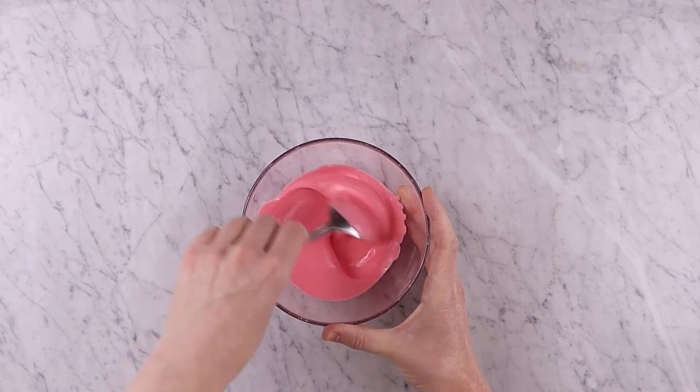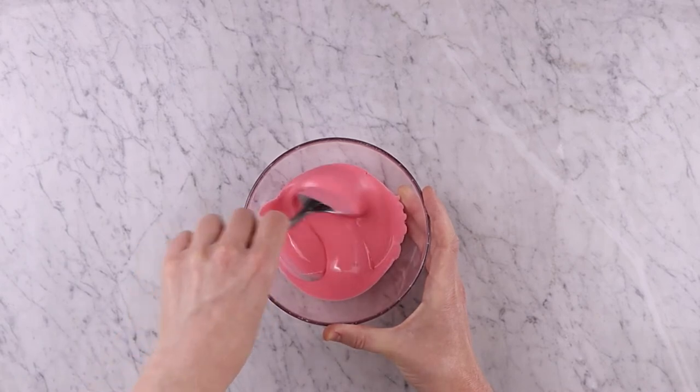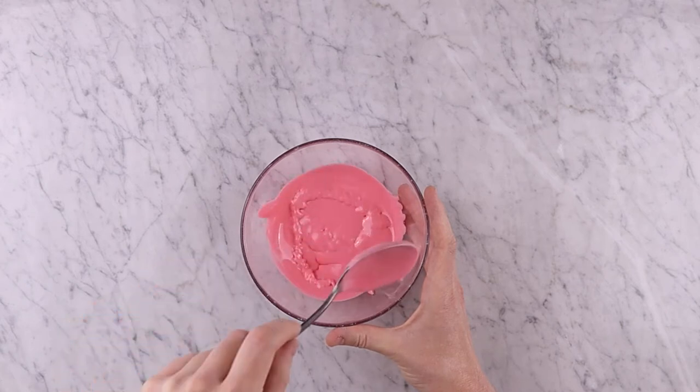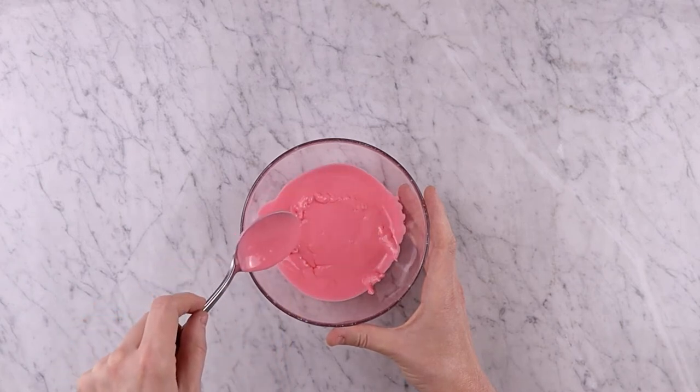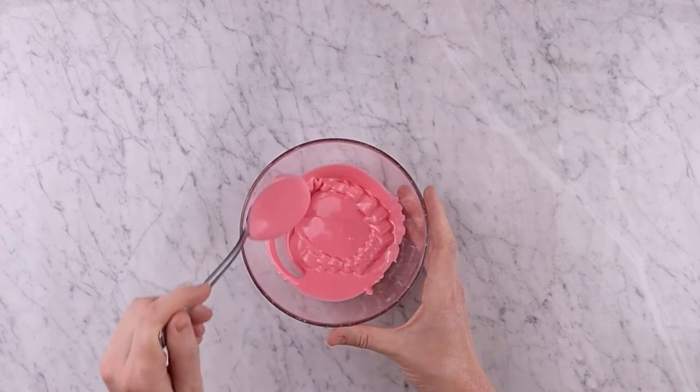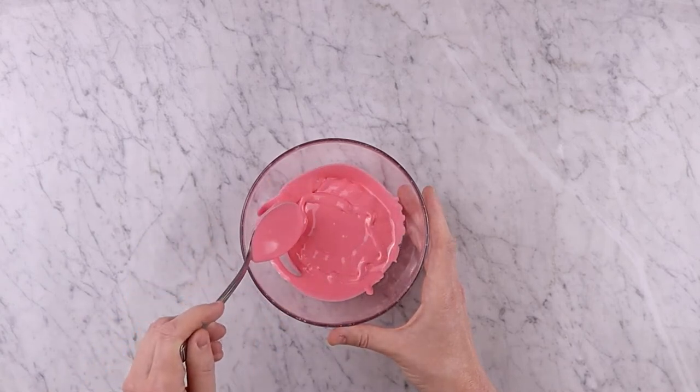Flood icing has a thinner consistency than line icing. We say that flood icing should have a 5 second consistency, meaning that when you dribble it back into the bowl it should sink into the rest of the icing within 5 seconds. Unlike the line icing, no stiff peaks remain.